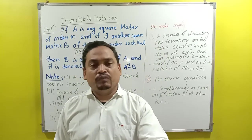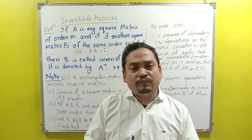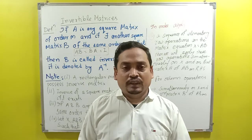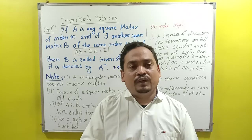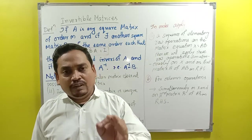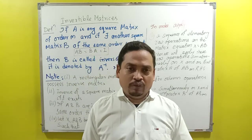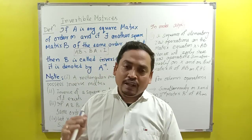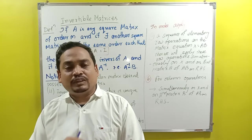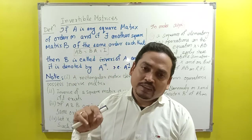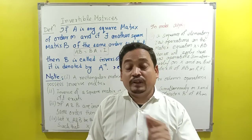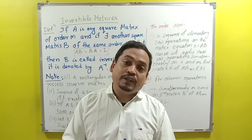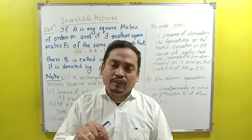Similarly for matrices, the identity element is the identity matrix I. A square matrix A of order m is said to be invertible if there exists another square matrix B such that A·B = B·A = I. Matrix multiplication is generally not commutative, but here it should satisfy A·B = B·A = I. Then B is called the inverse of A.